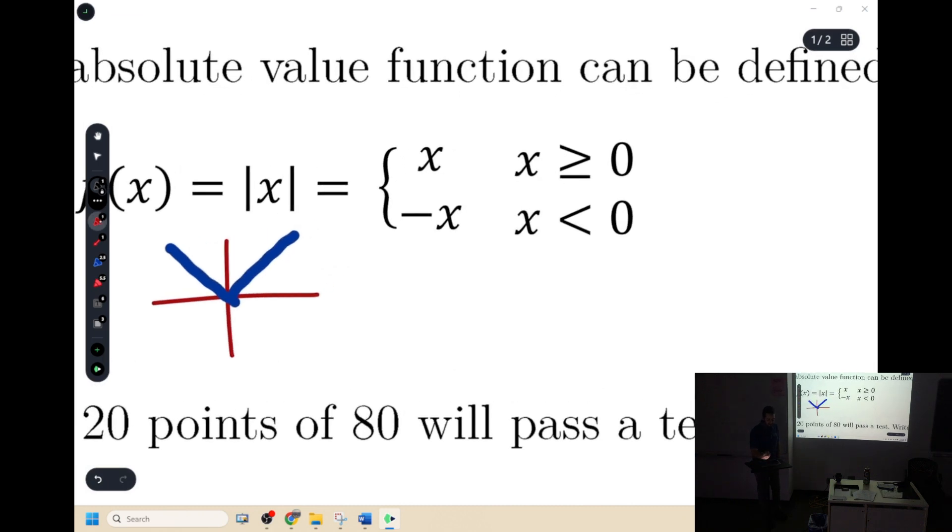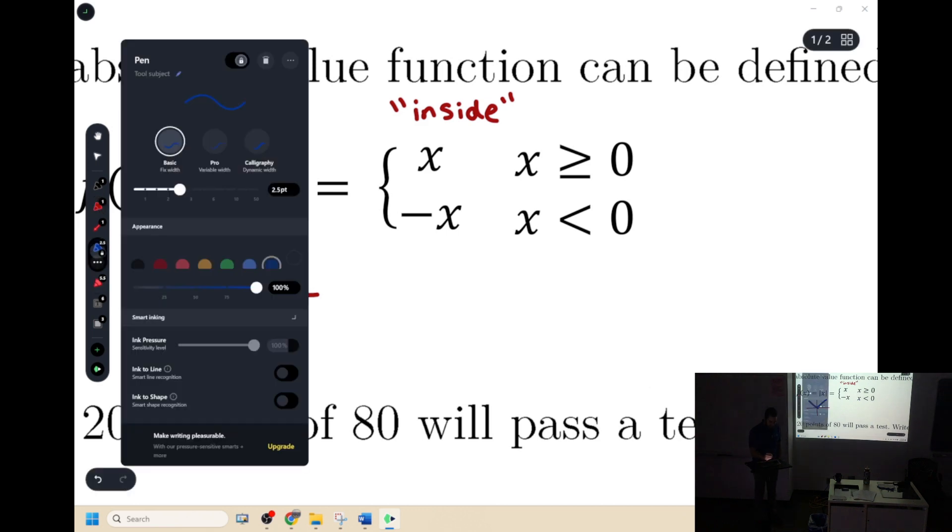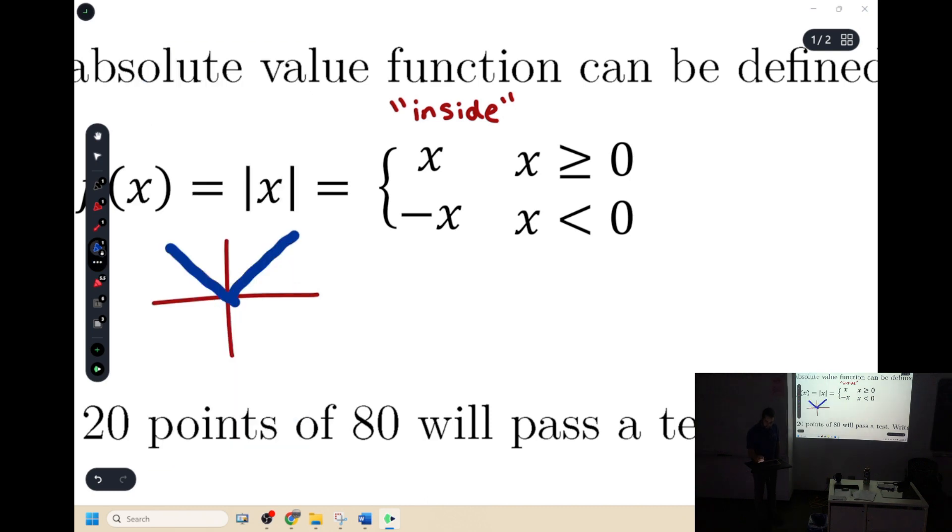And so here's what the graph is. It's you took what was, and I think this is important to note, you took what was inside, right? And what did you do to it? You took what was inside of the absolute value. You didn't take just the x. You took the whole inside. And what did you do to the inside? For the top one, it's left alone, right? Which is kind of cool. It's like, oh, we left it alone if bigger than zero.